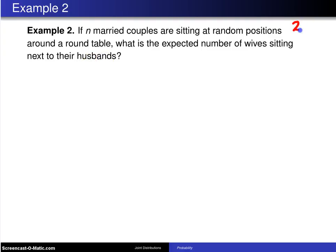Keep in mind here, for this particular table, there are 2n chairs because there are n married couples. Let's go ahead and start this problem out by defining a random variable x sub i, which will be 0 if wife i is sitting apart from husband i.